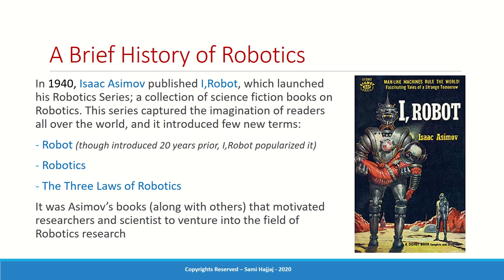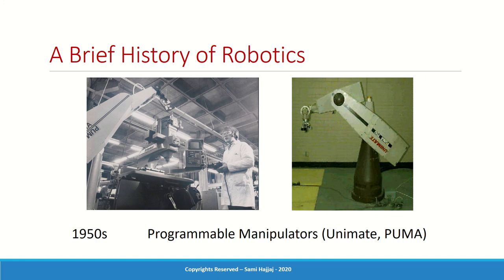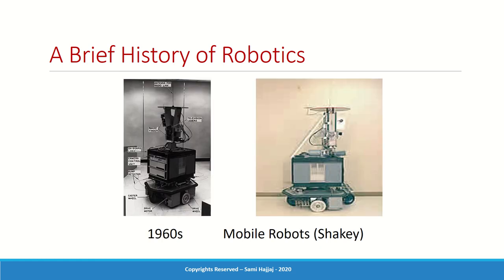From there, a new generation of scientists and students were fascinated by this field, leading to a boom in the development of robotics. Moving faster through the timeline: in the 1950s, the first programmable manipulator appeared — the first concept of a controller and programmer — following the development of early controllers about ten years prior. In the 1960s, the first mobile robot, Shakey, was developed.